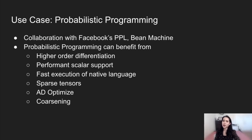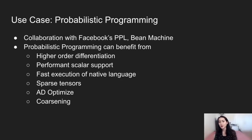Now that we've gone over all the major components of our framework, let's look at an interesting use case. Bean Machine is a probabilistic programming system for Bayesian models being developed at Facebook. Traditional differentiation and machine learning frameworks were not a good fit for them — they generally lack higher-order differentiation, performant scalar support, sparse tensor support, and fast execution of native language. For example, Newtonian Monte Carlo is a probabilistic inference algorithm that uses second-order differentiation and is well suited for scalars. With our framework, we're collaborating with Bean Machine to provide the differentiability infrastructure that they need.